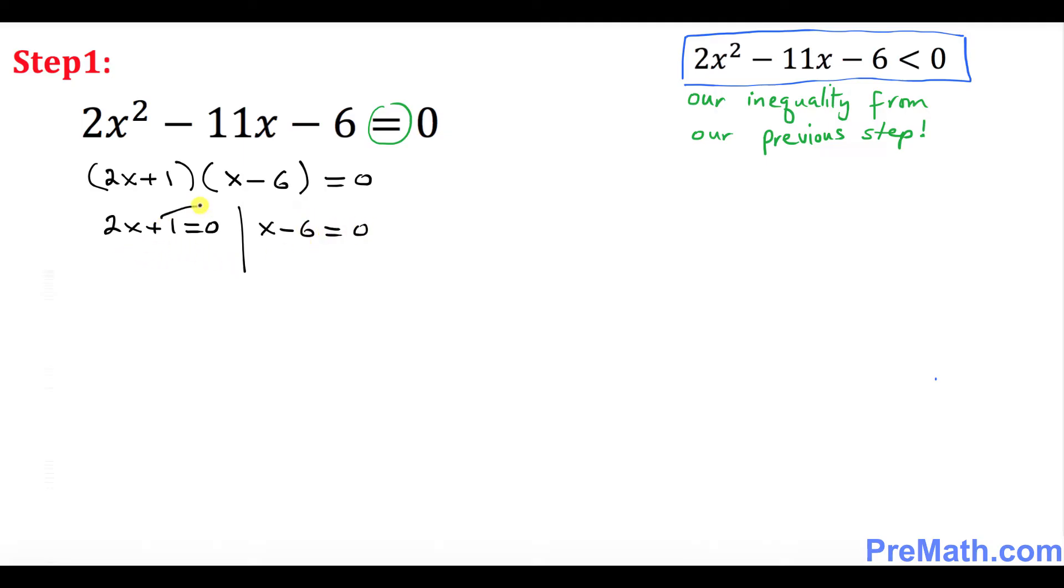So if you move this one on the other side it becomes -1, so 2x = -1. So x = -1/2 is one of your x values and here x = 6 is your another x value.